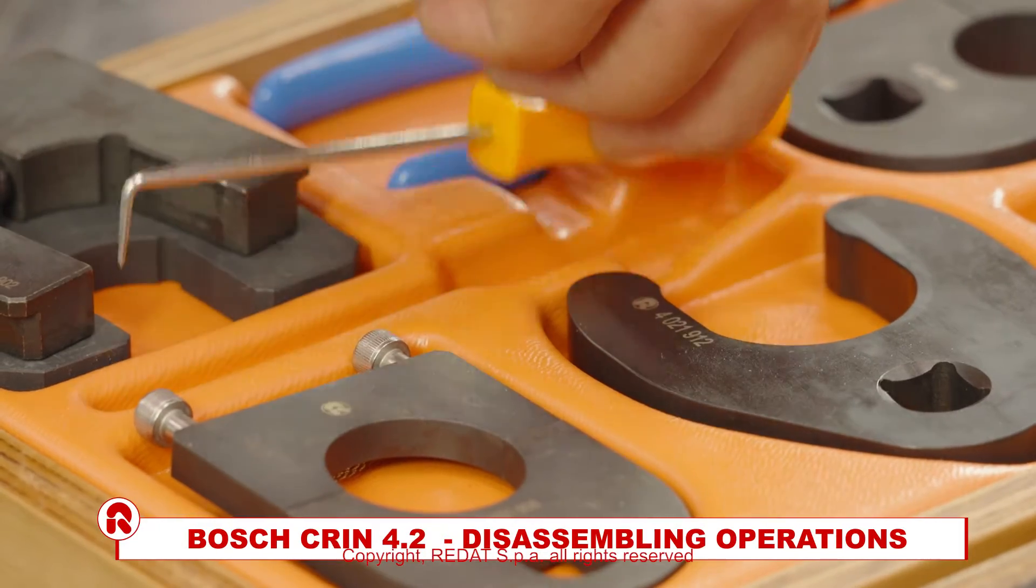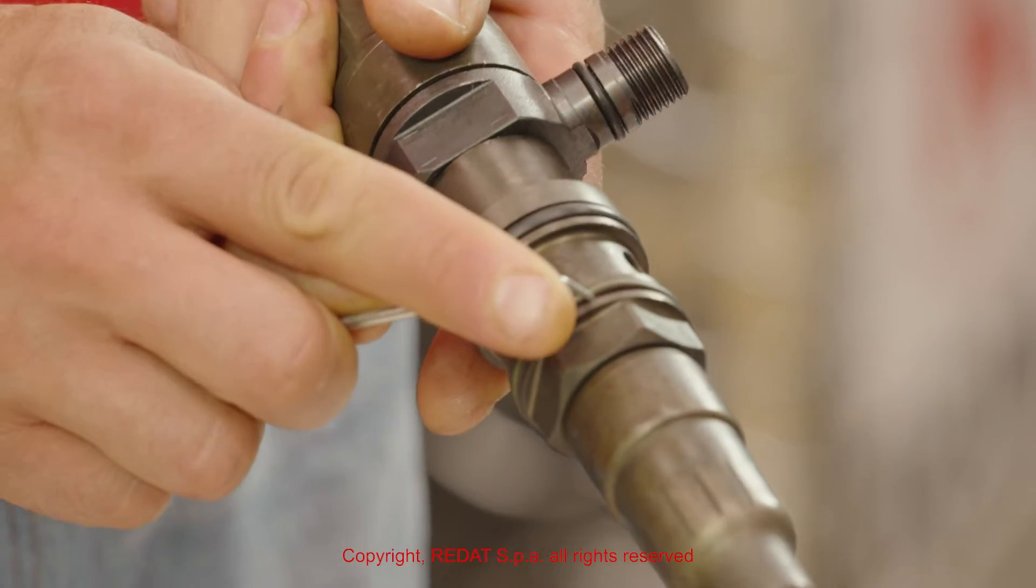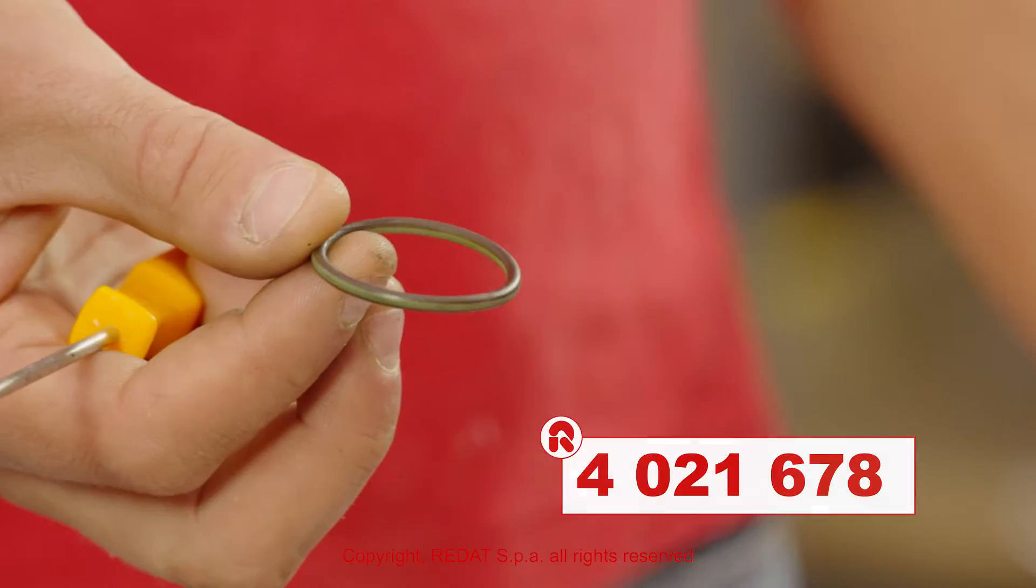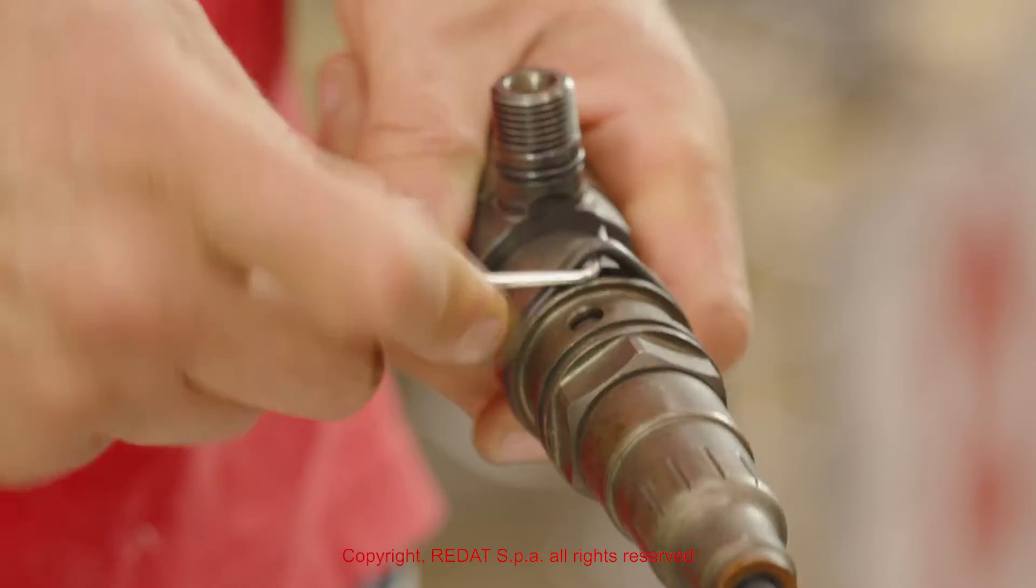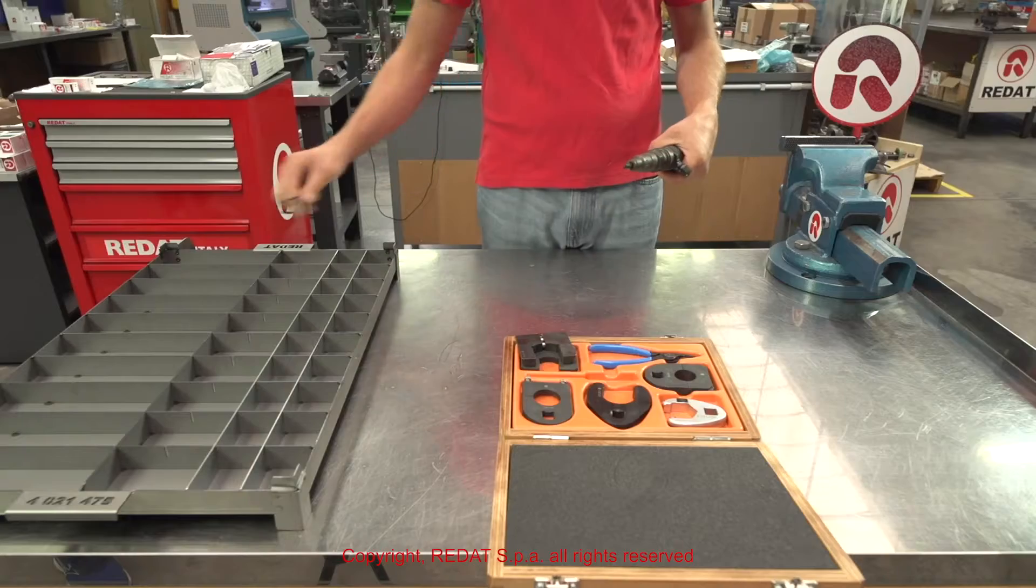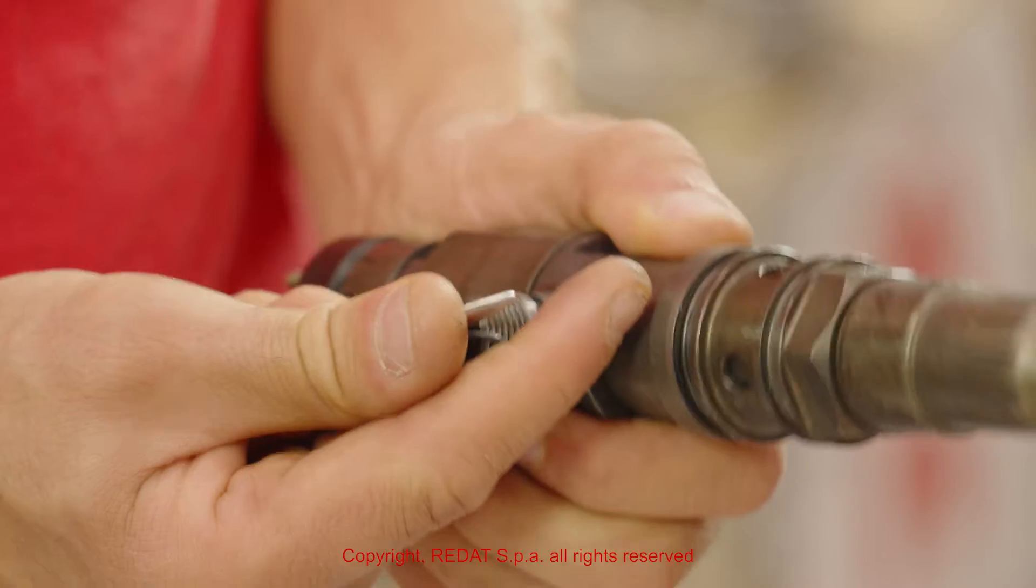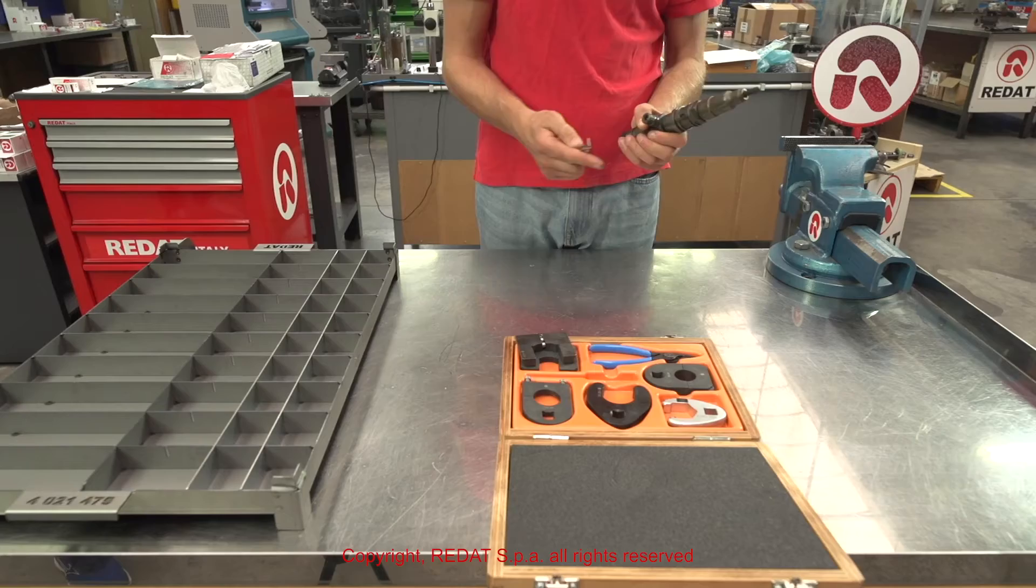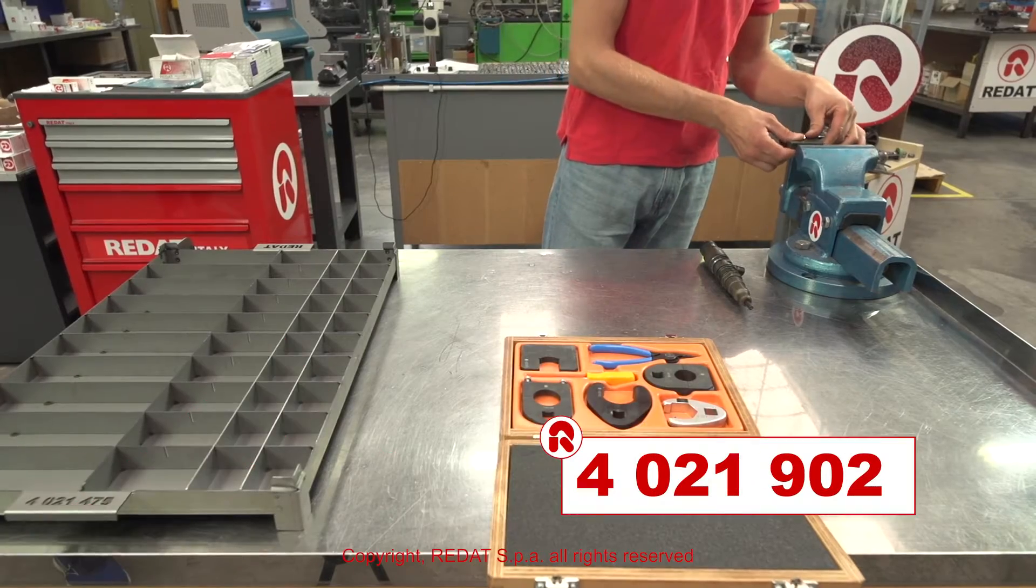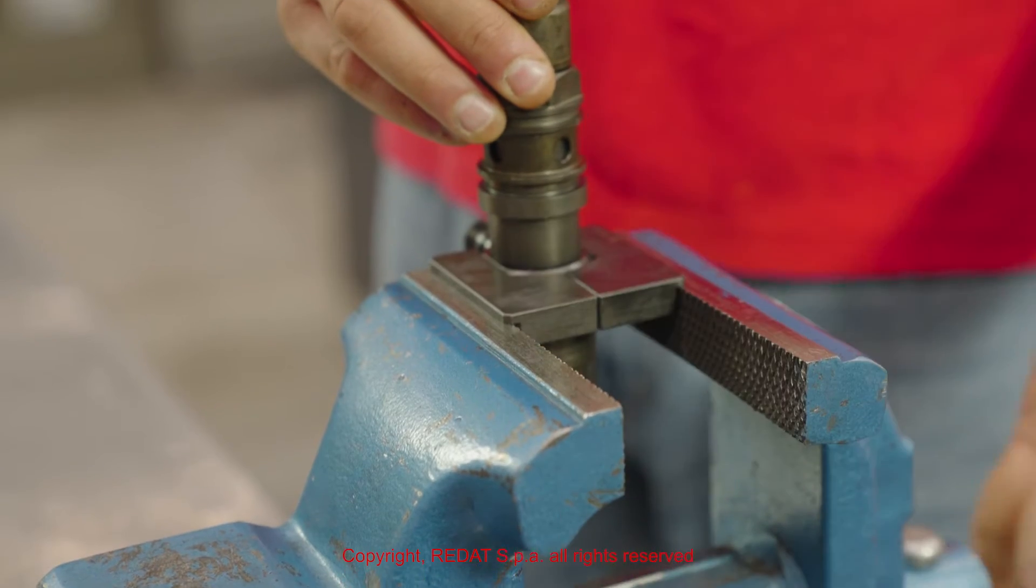We start the disassembly procedure by removing all the O-rings using the hook tool 4 0 2 1 6 7 8. With the holding block 4 0 2 1 9 0 2, we place the injector in the vice.